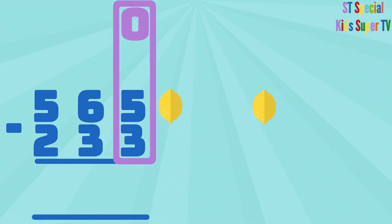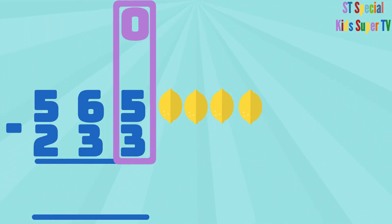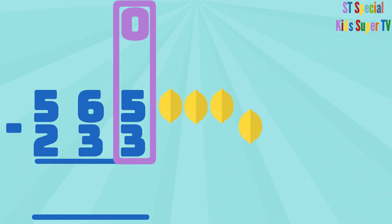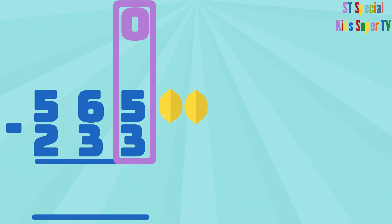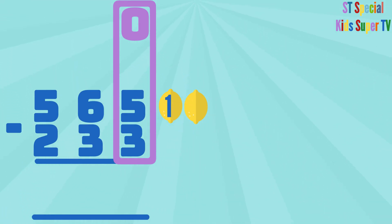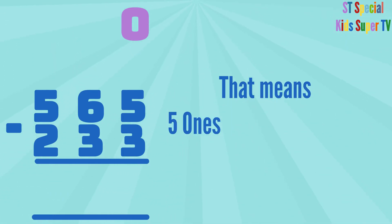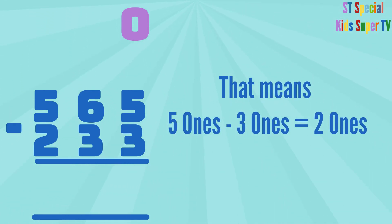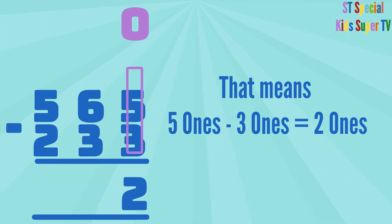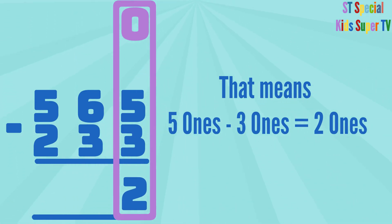1, 2, 3, 4, 5 lemons minus 1, 2, 3 lemons equals 1, 2 lemons. That means 5 ones minus 3 ones equals 2 ones. So you write the 2 under the ones column.